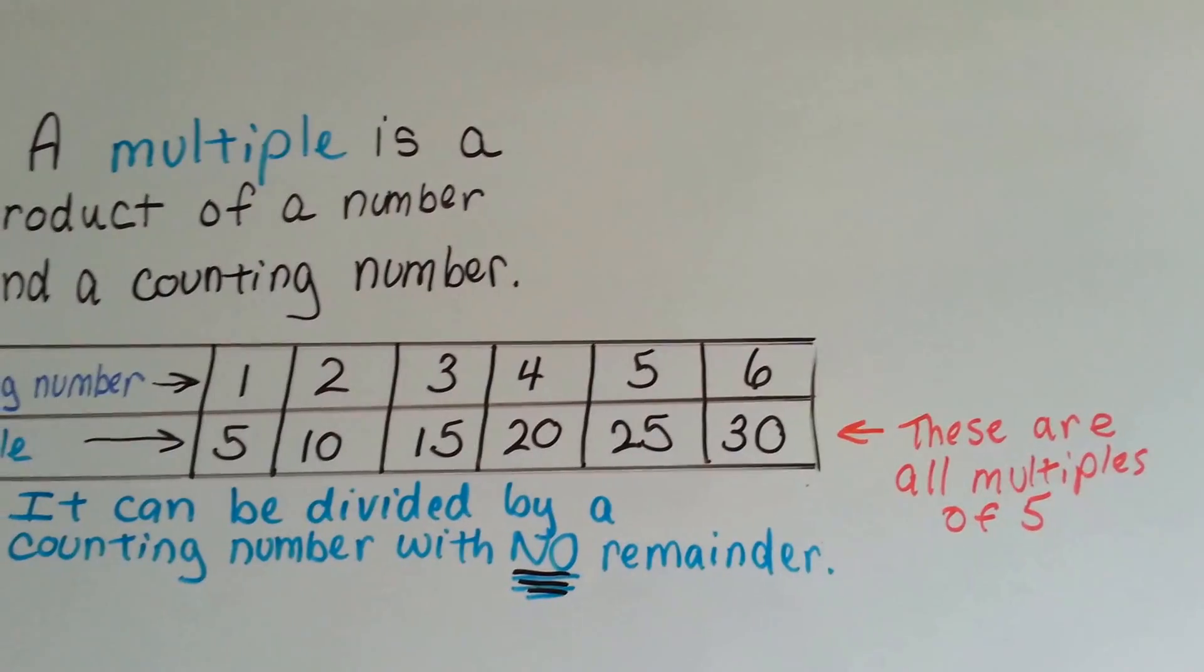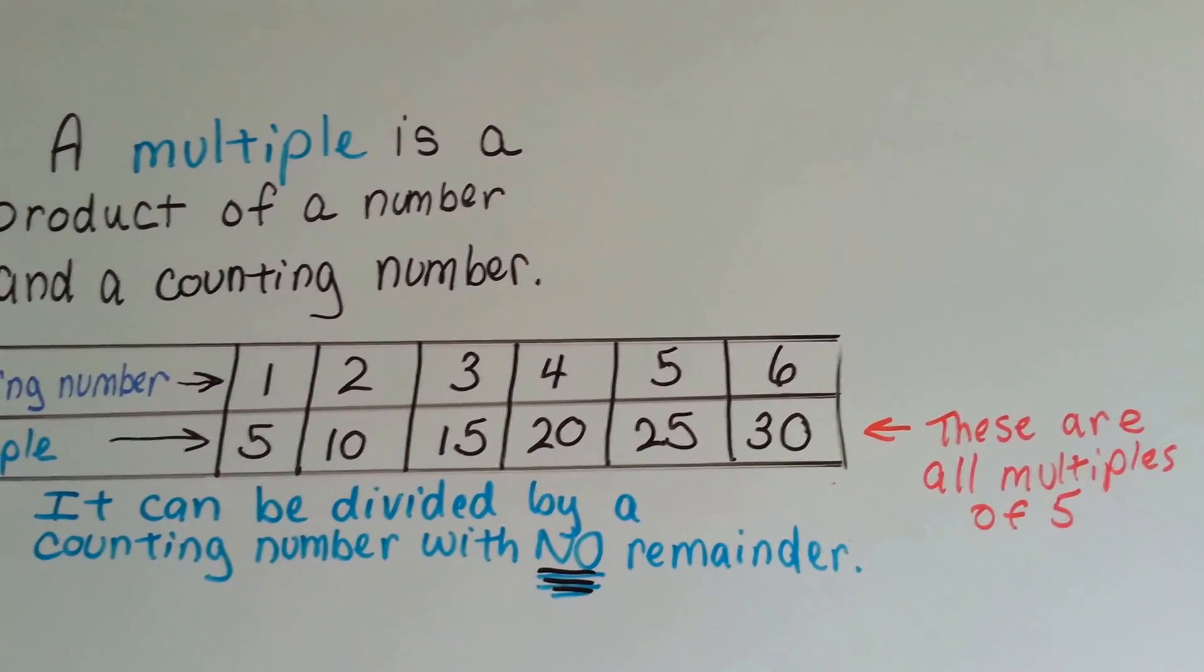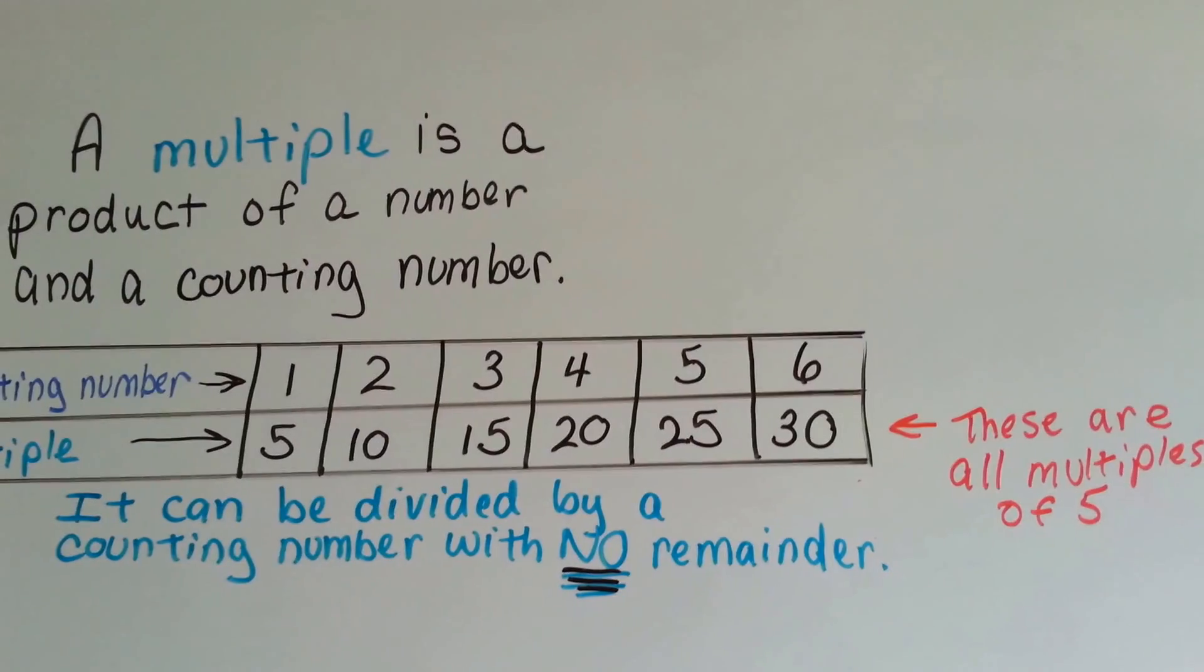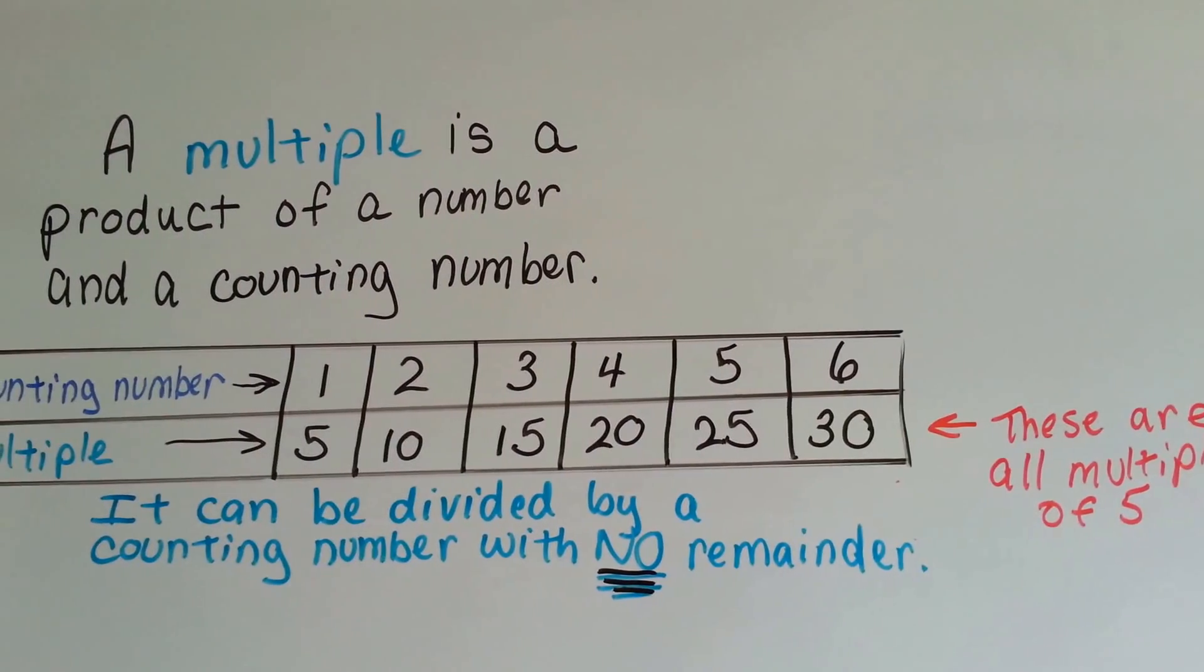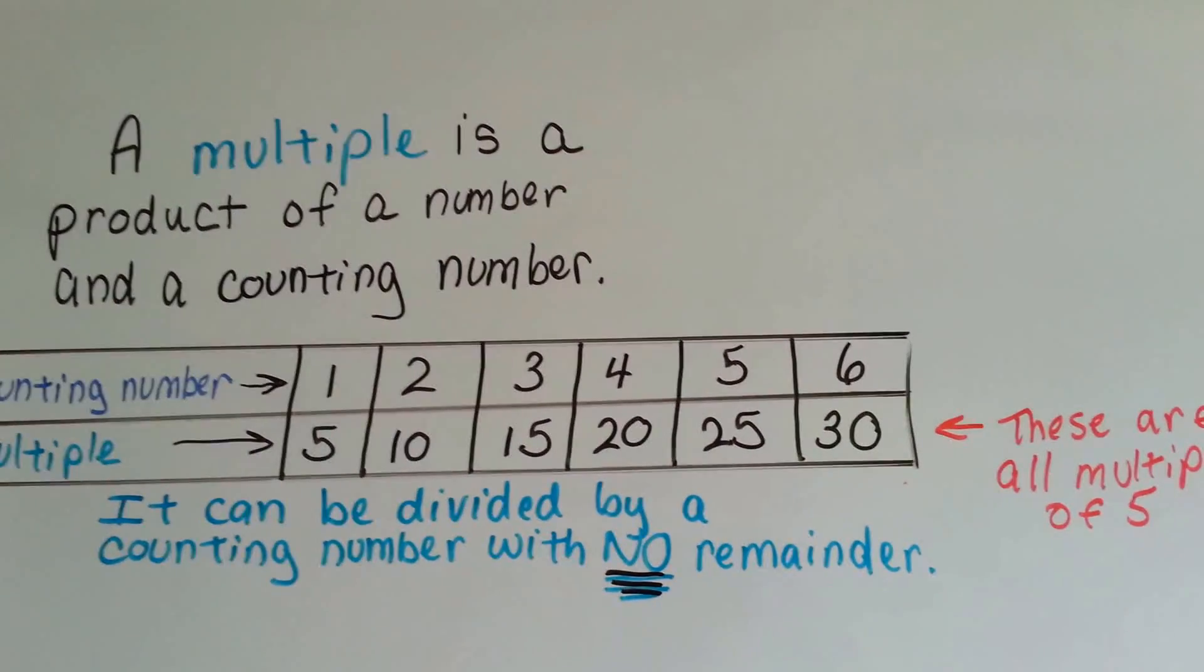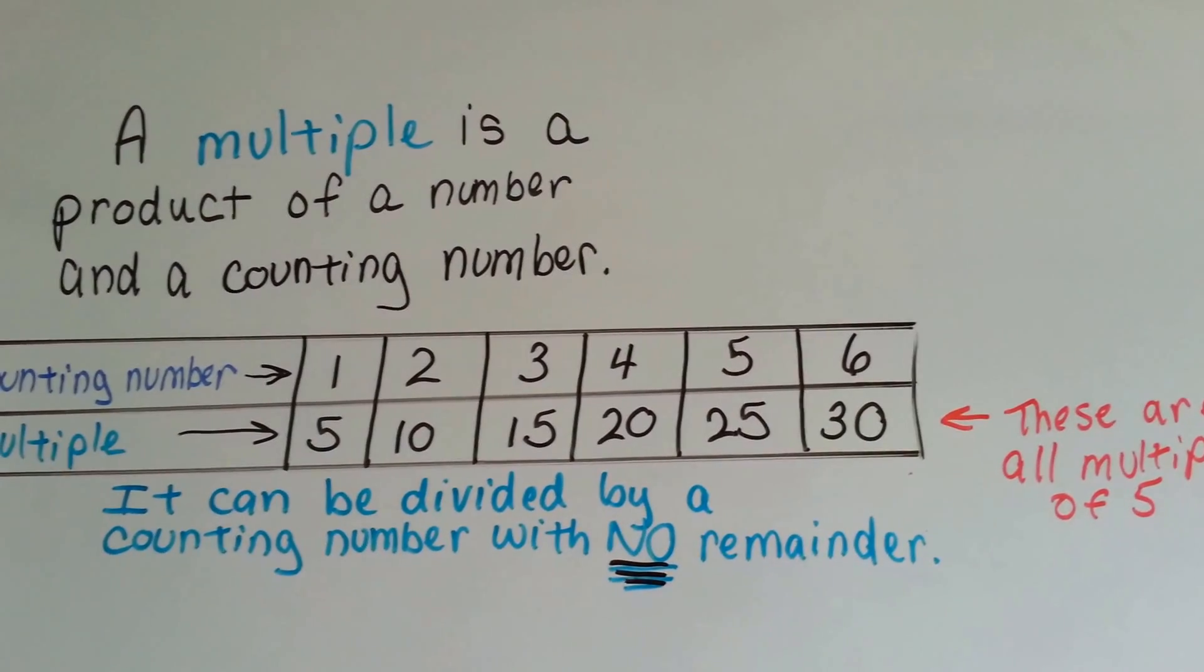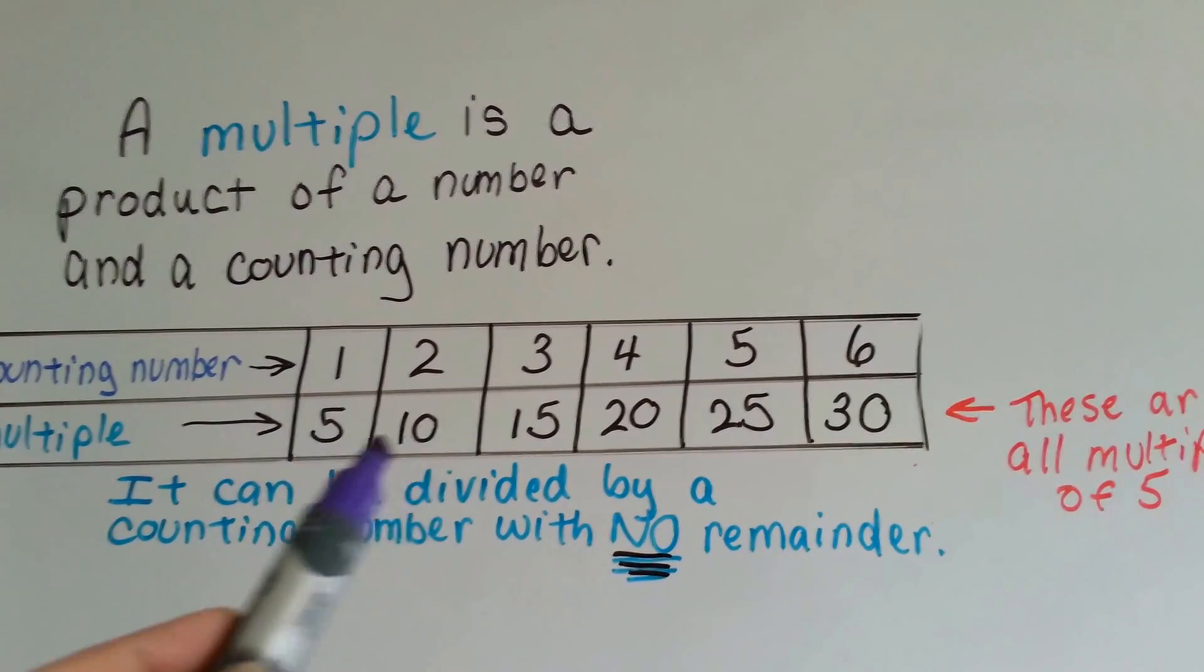If you had multiple cookies, that means you would have more than one cookie, right? If you had multiple dogs living in your house, that means you have more than one dog. So a multiple is a bunch of that thing.